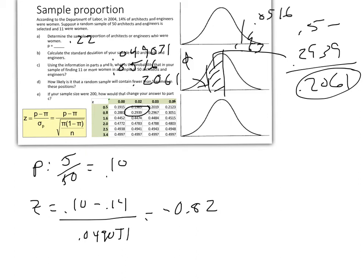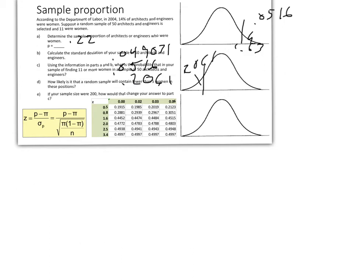Now we've got part E. It says, if your sample size changes to 200, how will that change your answer to part C? I'm going to pause again and clear this, and we'll look at that result now.